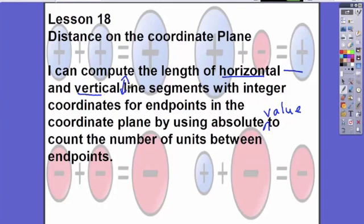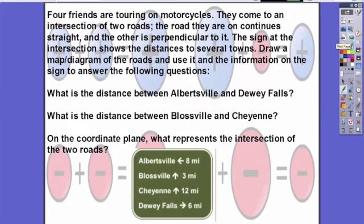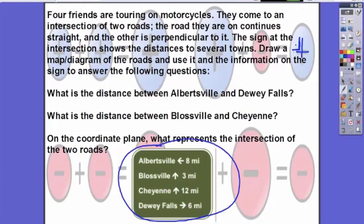Here's our problem we're going to be focusing on. Four friends are touring on motorcycles. They come to an intersection of two roads. The road they are on continues straight and the other is perpendicular. Perpendicular means they're intersecting at that 90 degree angle. The sign at the intersection shows the distances to several towns. Draw a map or diagram of the roads and use it and the information on the sign to answer the following questions.